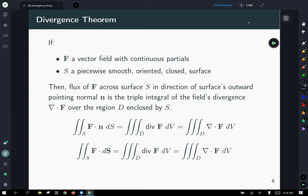Then the flux of F across our surface S in the direction of the surface's outward pointing normal, with the normal given by n as usual, is the triple integral of the field's divergence over the region D enclosed by our surface. So this time we're going to take the interior of the surface. Stokes' theorem took the line integral of a curve and related it to a surface integral over the interior of the surface. And here, the divergence theorem takes a surface integral and relates it to a triple integral over the interior of that surface.